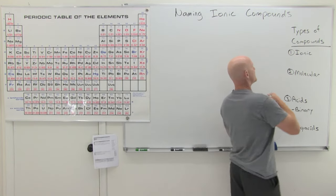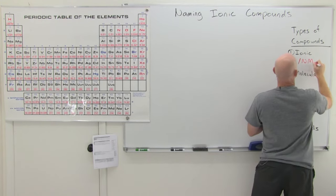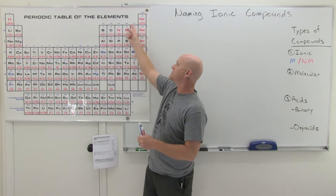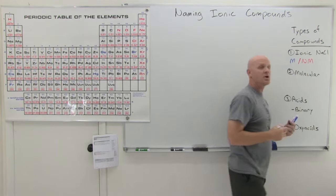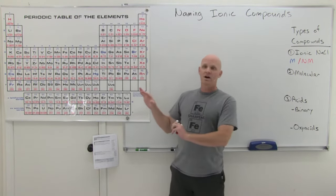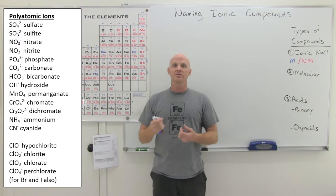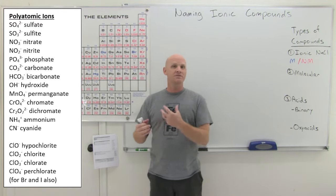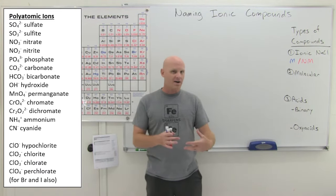Ionic compounds generally have a metal combined with a non-metal — an element from the metals side combined with one from the non-metals side. The most famous example is NaCl, sodium chloride. In addition to monatomic ions, you can also have polyatomic ions, where instead of a single element in the ion, you have many atoms of different elements — many of them containing oxygen — as part of those polyatomic ions.